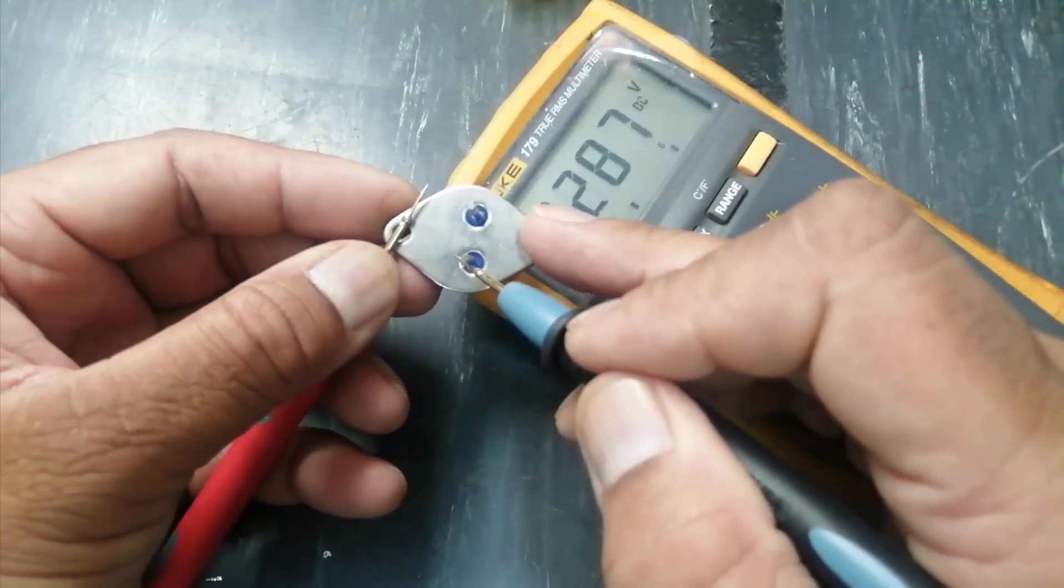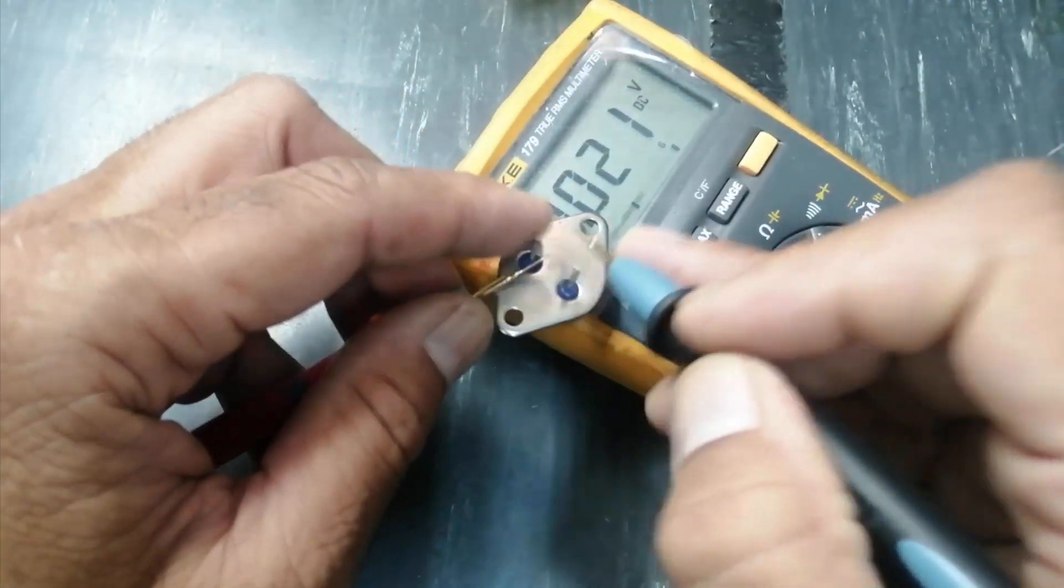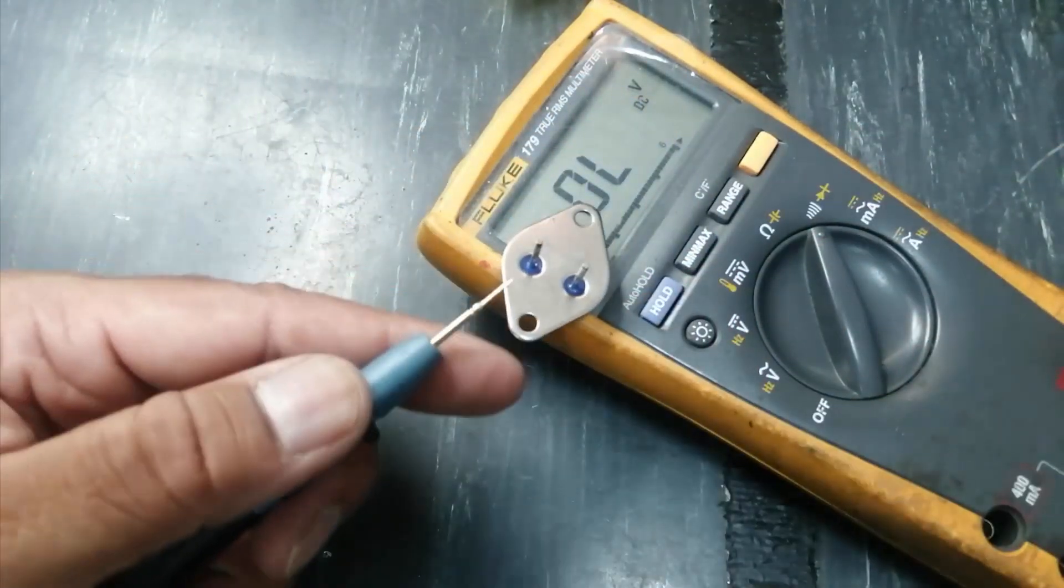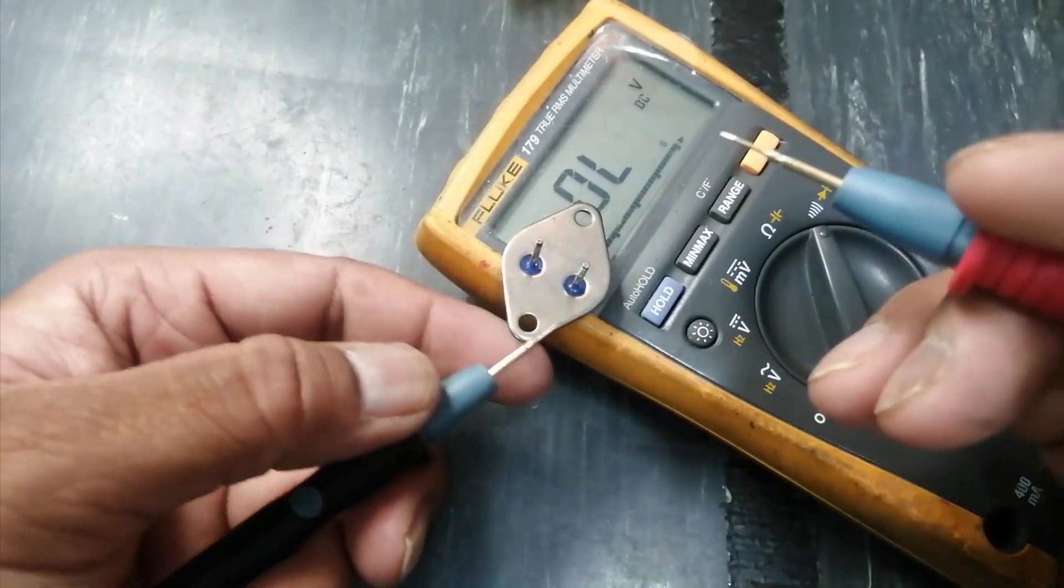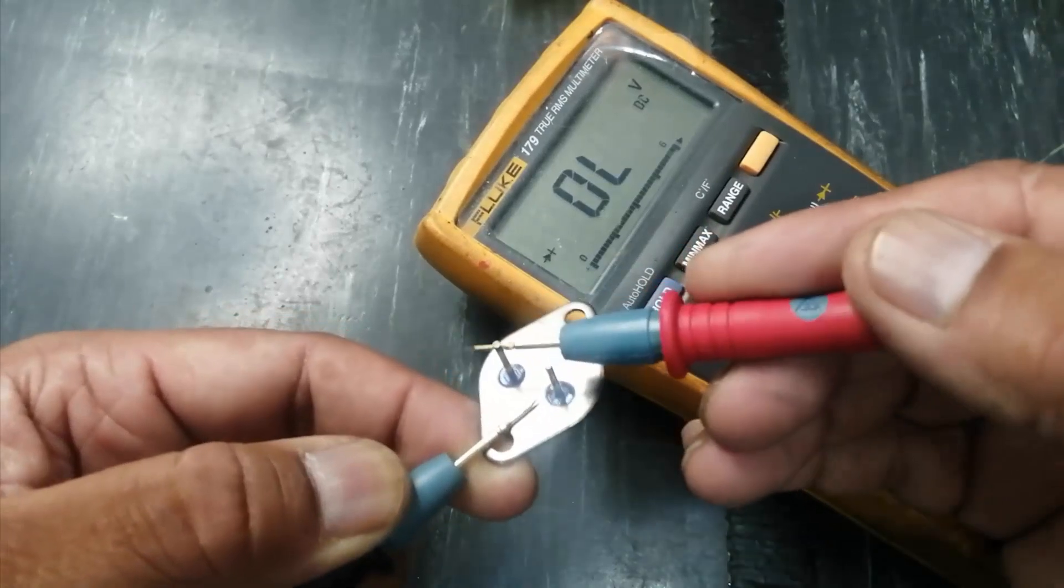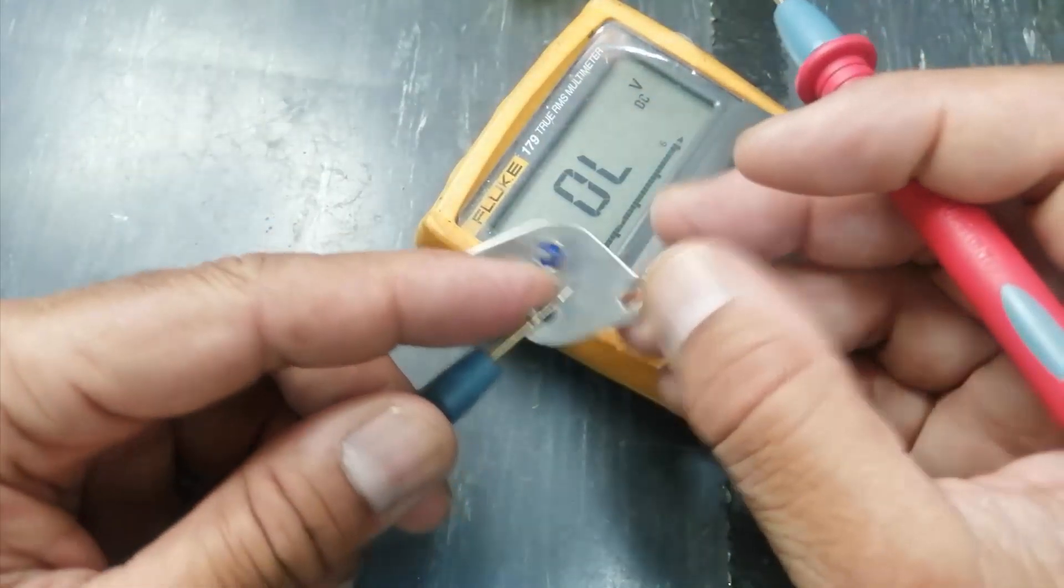Now connect this lead to body and connect to both leads. It is short in both directions, this way and this way. Now move this lead to your left hand and connect this lead to body. Connect to one lead, connect to second lead. Now move this lead to this pin.